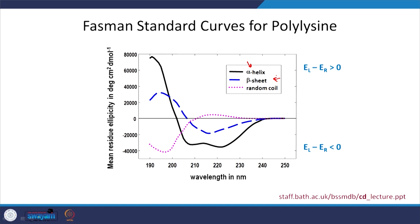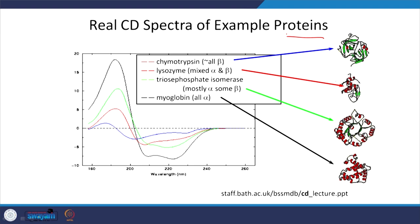Standard curves have been plotted for alpha helix, beta sheet, and random coil. If CD is less than 0, you have a negative value; if greater than 0, a positive value. From these you can conclude the value of circular dichroism for a particular polarization. Real CD spectra of proteins such as chymotrypsin, lysozyme, triosephosphate isomerase, and myoglobin show that in different regions they have different circular dichroism signatures.